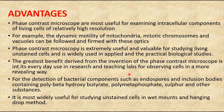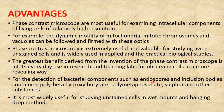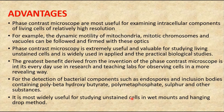The greatest benefit derived from the invention of the phase contrast microscope is its everyday use in research and teaching labs for observing cells in a more revealing way. It is also used for the detection of bacterial components such as endospores and inclusion bodies containing polyhydroxybutyrate, polyphosphate, sulfur, and other substances. It is widely used for studying unstained cells in wet mounts and the hanging drop method.